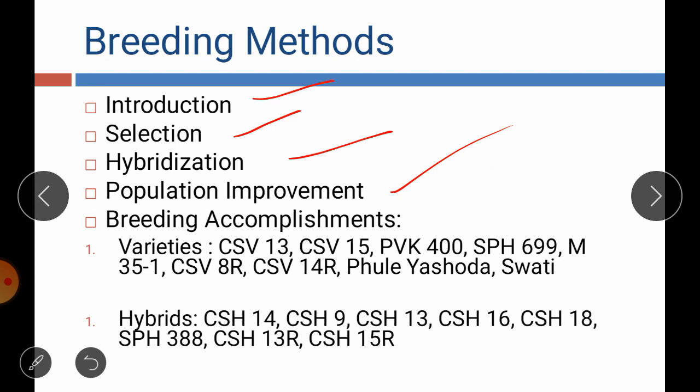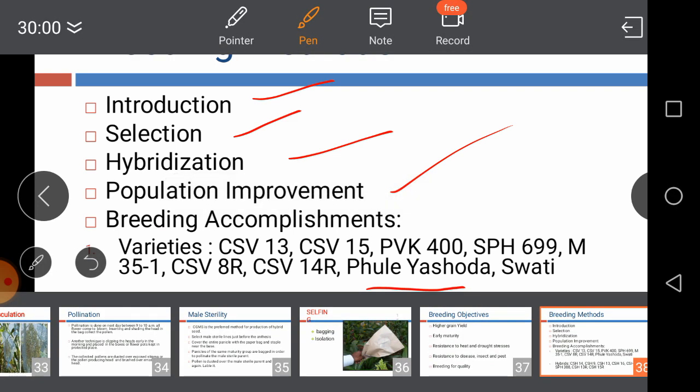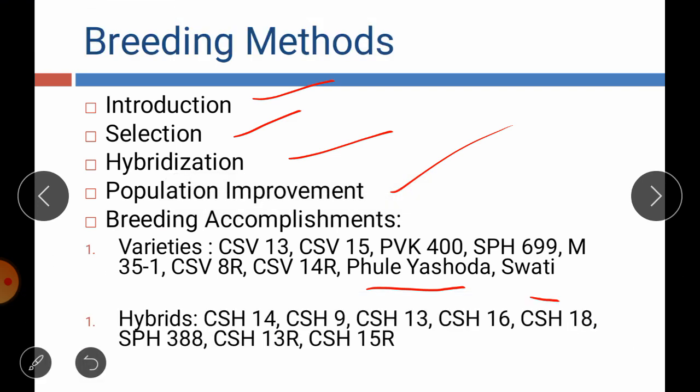Breeding accomplishments: in sorghum, many varieties have been released, both improved and hybrid ones. Improved varieties include Kule, Yashwada, and Swati. Hybrid varieties include CSH 14, CSH 9, CSH 13, CSH 16, and CSH 18. This concludes the topic of sorghum emasculation and hybridization techniques.